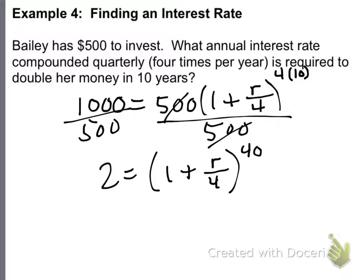Now, you ready for this? Are you ready for this, kids? How do you get rid of the exponent of 40? Kind of like you get rid of the exponent of 2, right? You take the square root. How do you get rid of an exponent of 3? You take the cube root. How do you get rid of the exponent of 40? Well, kids, we are going to take the 40th root of both sides. That's right, the 40th root. Now, in your calculator, you're going to do 2 to the 1/40th power. Those are going to cancel, and you're going to be left with 1 plus R over 4.